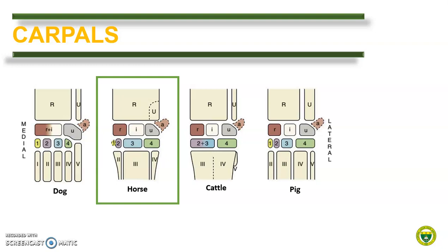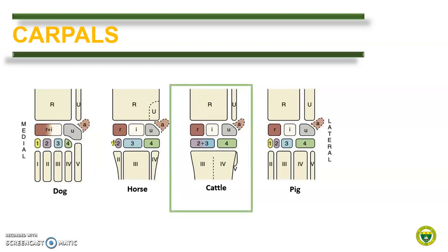In the horse, the first carpal bone is either present or absent, so they can have either seven or eight carpal bones. In ruminants, the bones of the proximal row are all present. The first carpal bone is missing, the second and third carpal bones are fused, and the fourth carpal bone is present, giving a total of six carpal bones.